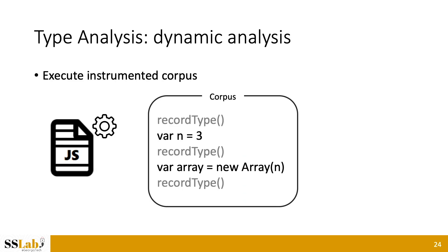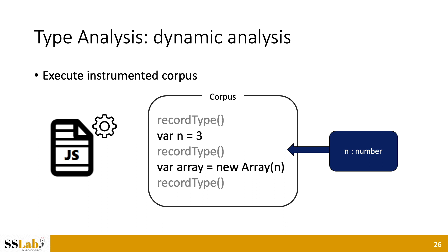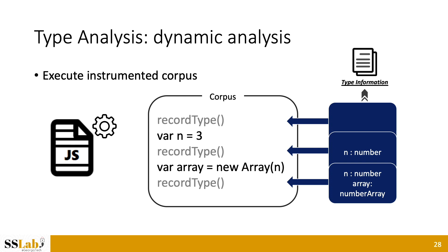In detail, our dynamic analyzer instruments the corpus to record type per each line. For example, at the first record type function call, our type information box is empty. At the second function call, it records the type of variable N as a number. At the last function call, it also records the array type and number arrays. This is possible because DAI maintains a more fine-grained type system than JavaScript itself. All recorded type information is gathered and passed to further processes, allowing us to get precise object and type information for each specific scope and context.